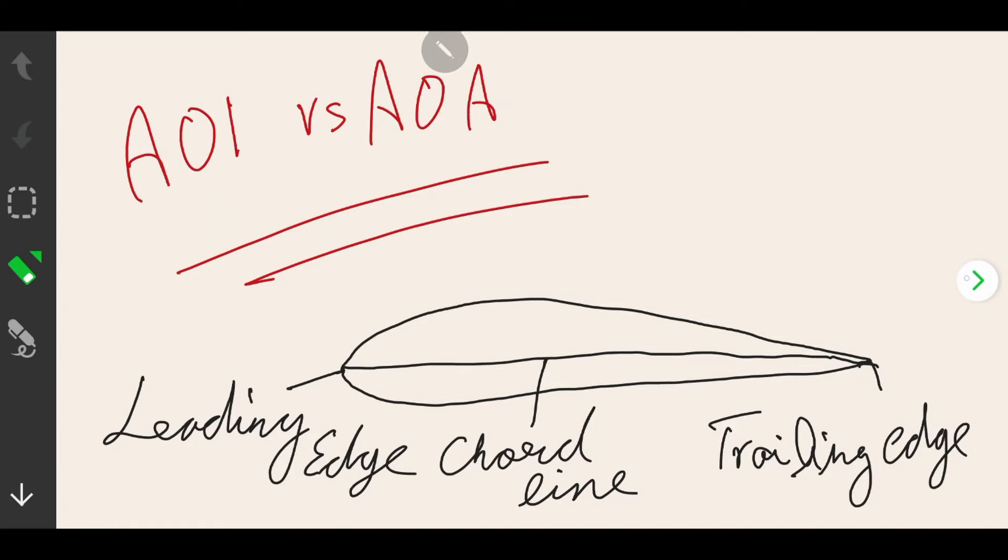As you can see on the screen, an airfoil consists of leading edge, trailing edge, and cord line. Remember this.